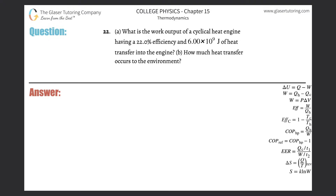Number 22, letter A. What is the work output of a cyclical heat engine having a 22% efficiency and 6 times 10 to the 9th joules of heat transfer into the engine? So basically what we need to do first — they're talking about efficiency, and we have to connect efficiency to work. We have this formula: the efficiency of a cyclical engine equals the work output divided by the heat of the hot reservoir, which is the amount of heat input into the engine.